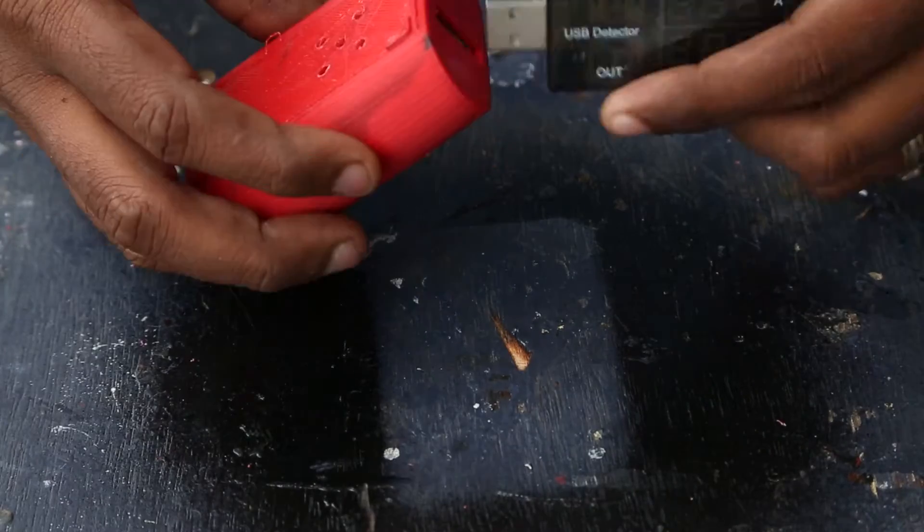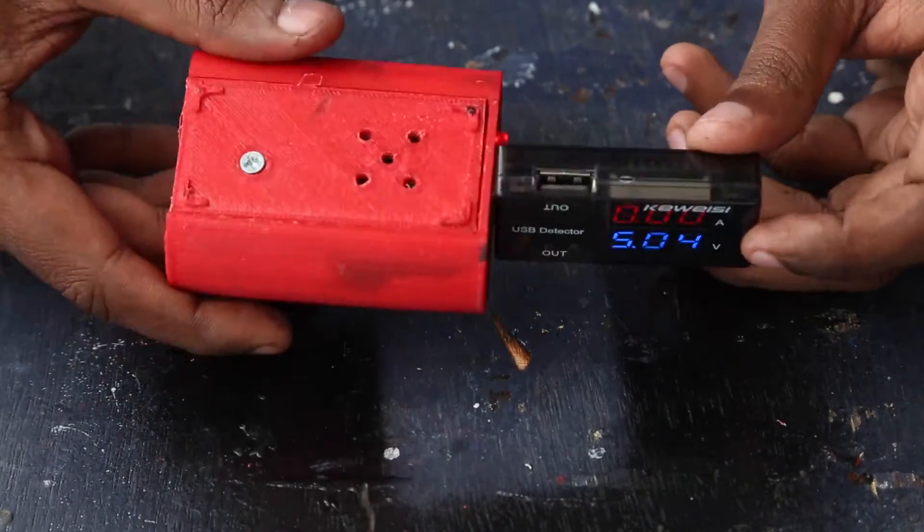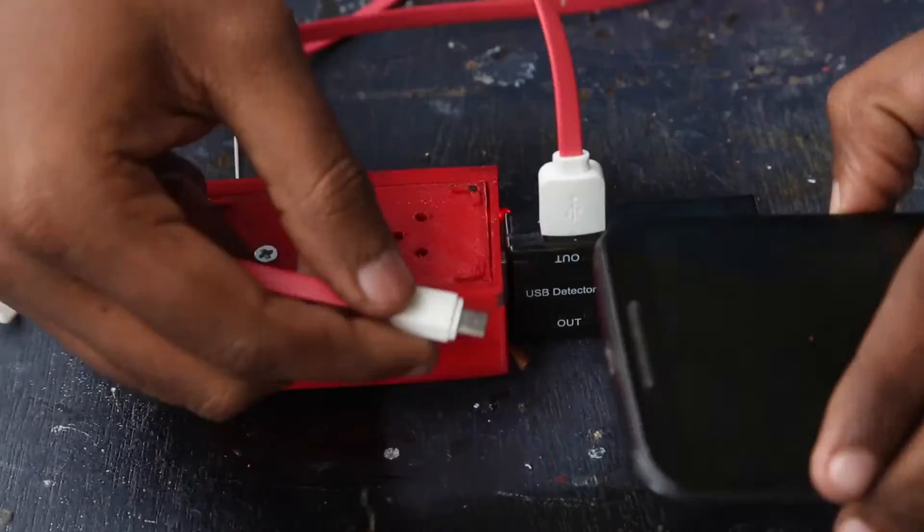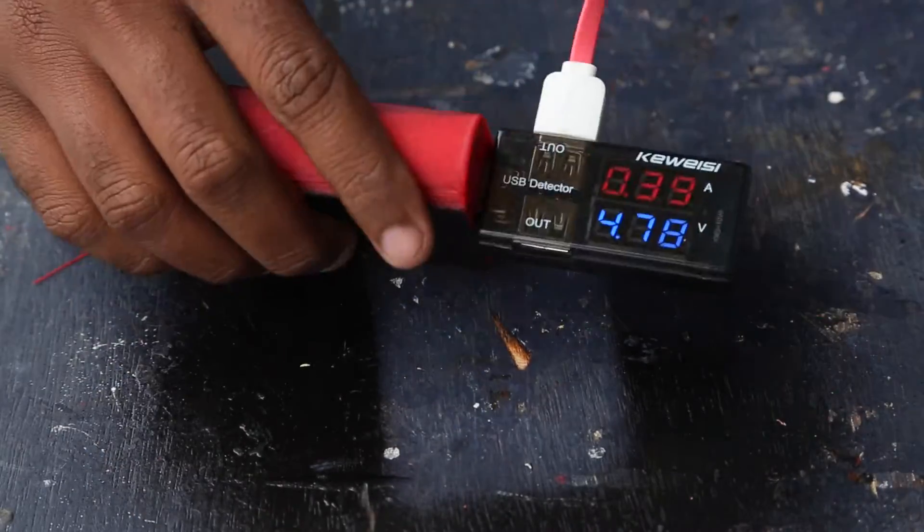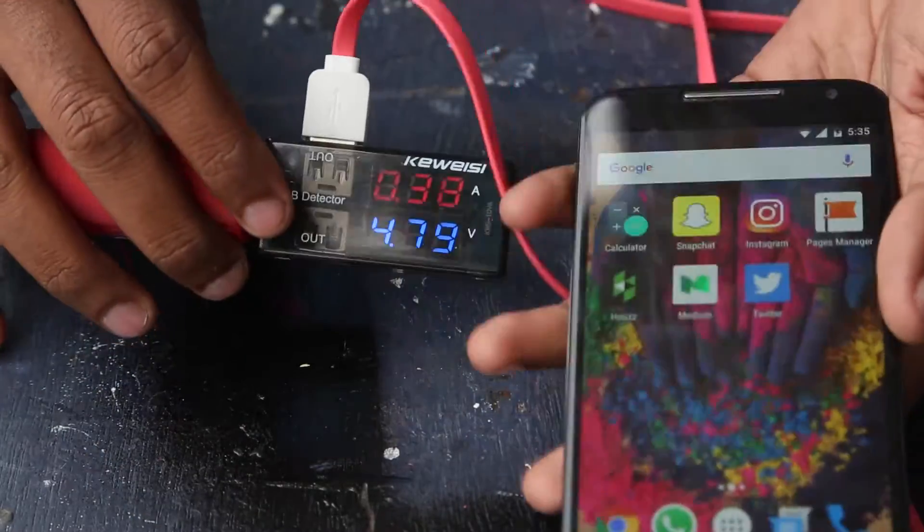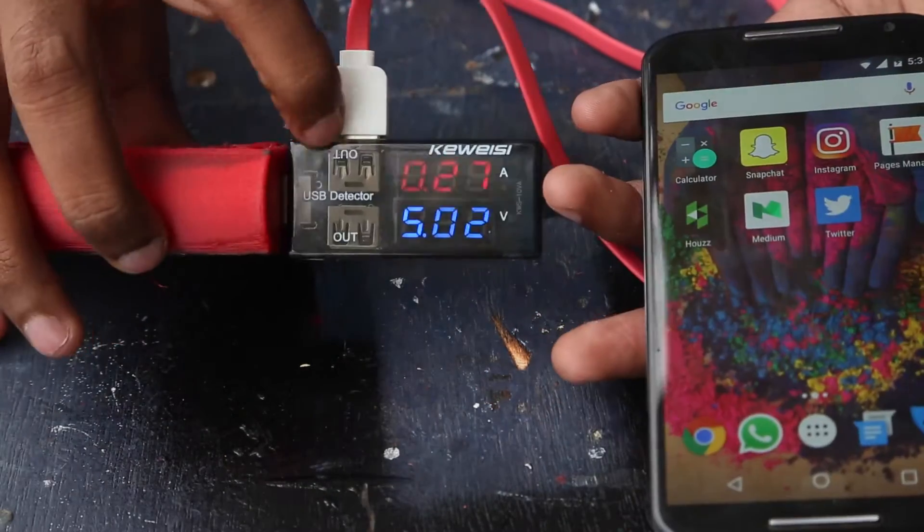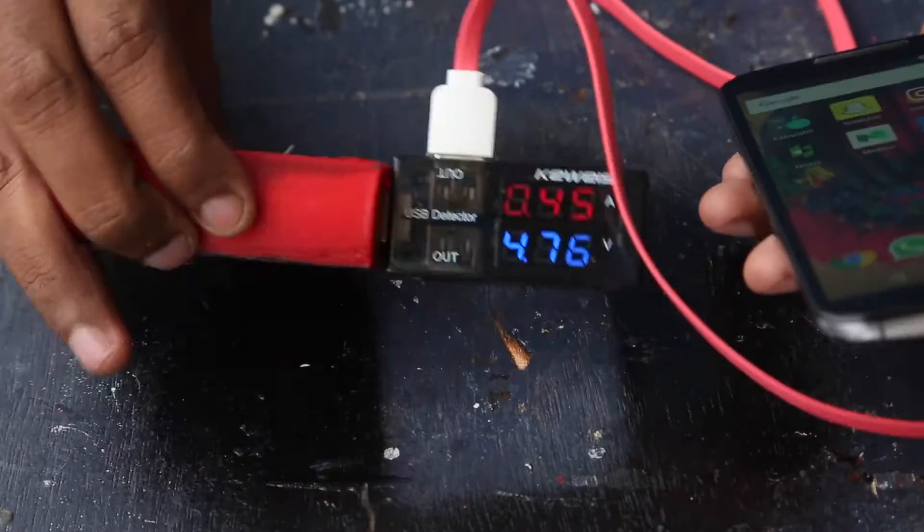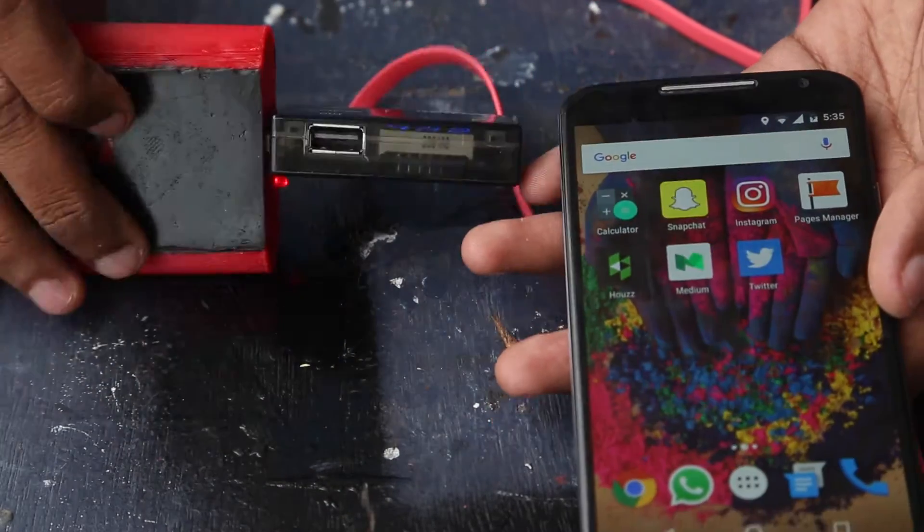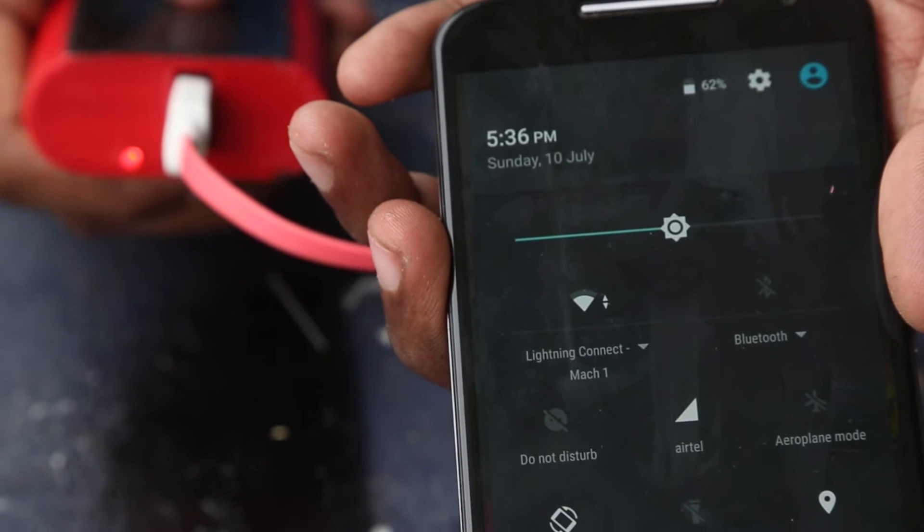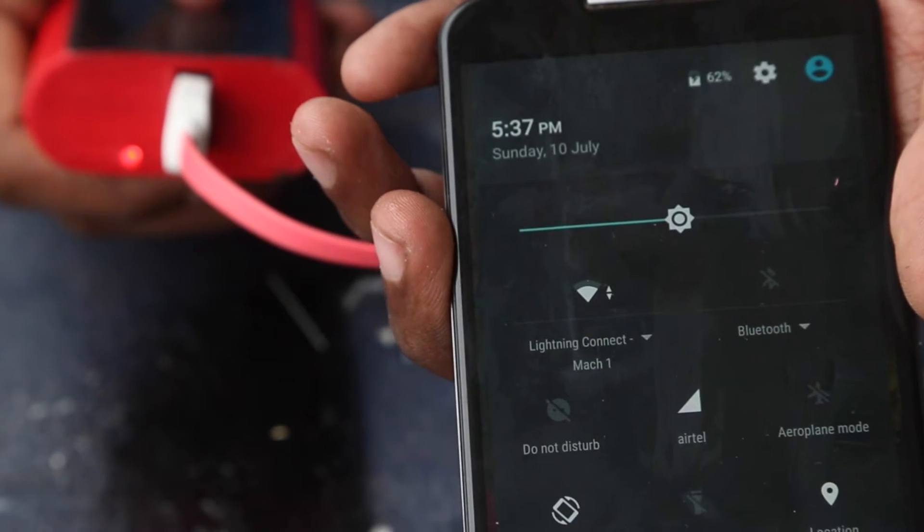This is a small gadget which measures voltage and current from USB ports. Here you can see the port delivering a constant 5 volts. And when I connect the USB to its output it shows the current draw. My mobile draws up to 40 milliamps. And here's the close up to show it's working.